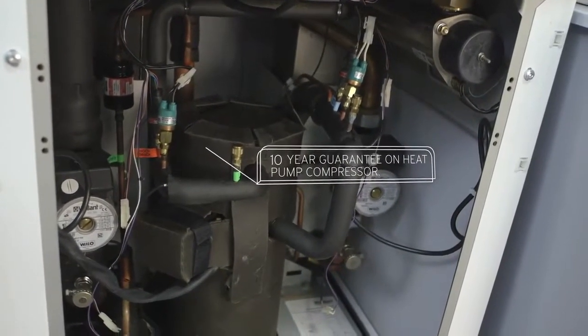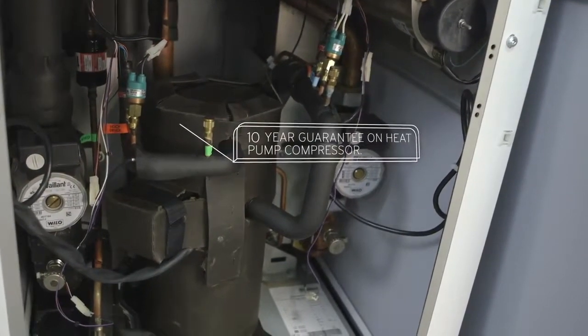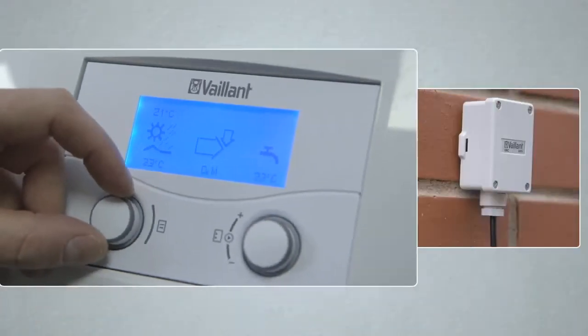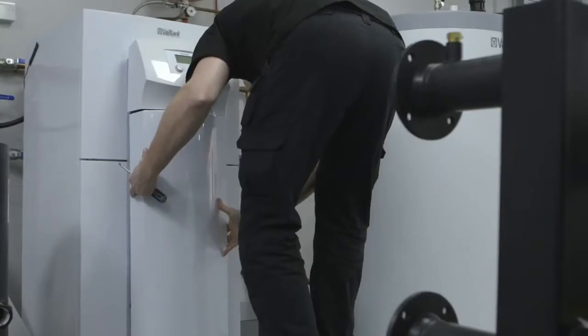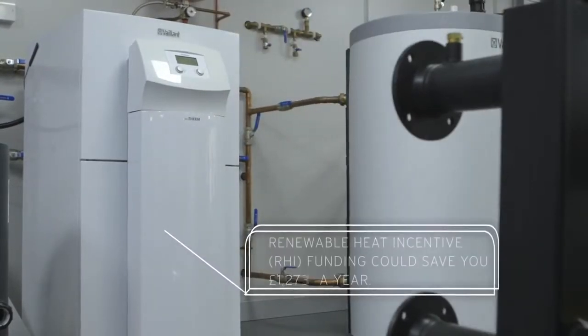Selected models come with a unique built-in 175-liter storage tank, and Valent weather compensating controls are standard. There's even a free Valent commission service giving you a three-year guarantee, and you could be eligible for RHI funding to help pay towards installation.